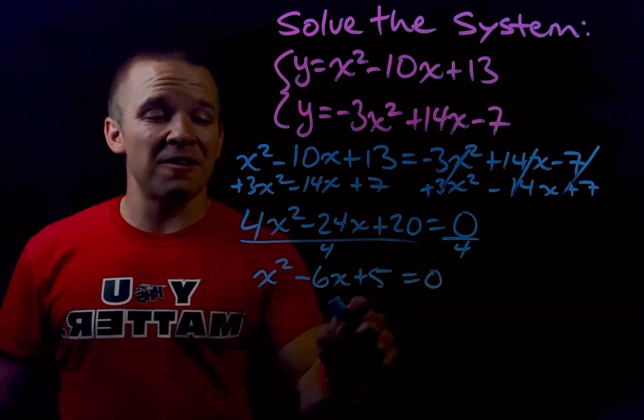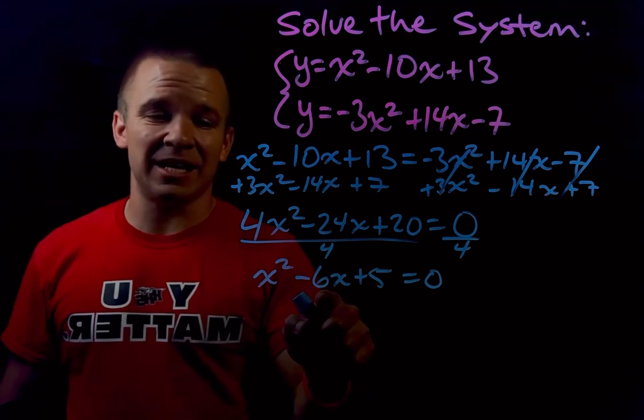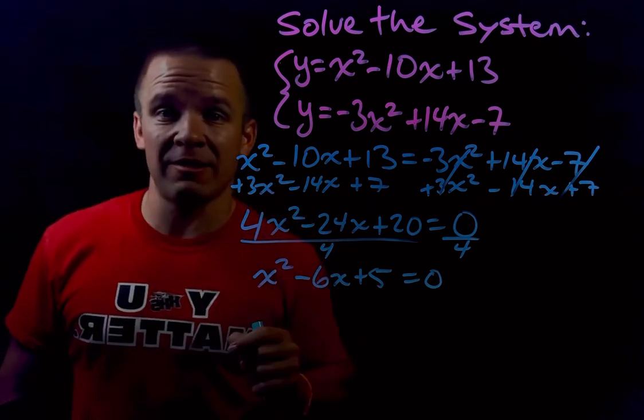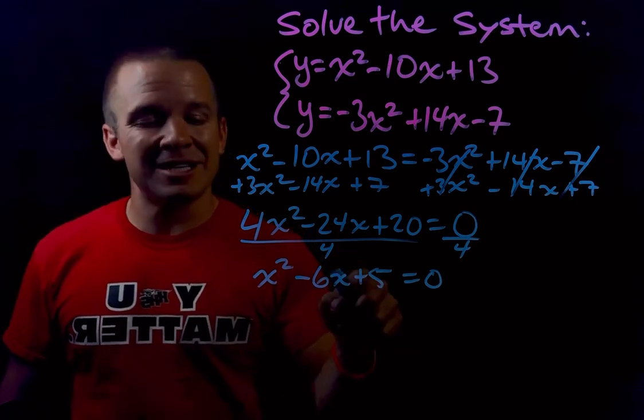Now to factor this, I need to find what multiplies to 5 and adds to negative 6. I'm gonna need 5 and 1, but they're both gonna be negative so they multiply to a positive and add to a negative.